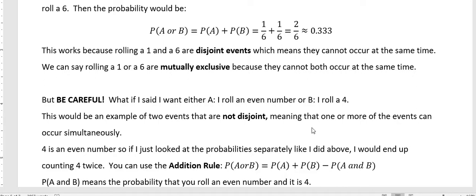So four is an even number. So if I just looked at the probability separately like I did above, I would end up counting four twice. Because if I looked at the probability of getting an even number, four would be included. And if I looked at the probability of getting a four, then I would already be looking at that twice. So then we have what we call the addition rule.